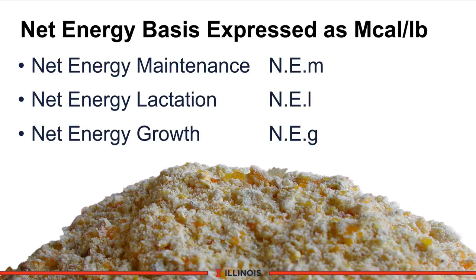The second energy system, and most common now in the U.S. and Canada, is the net energy system. Net energy is what's available after we remove all the losses. You will find three different terms listed for each feedstock: net energy maintenance — what's the energy content if the cow uses it to stay alive; net energy lactation (NEL) — if that energy is used to produce milk; or net energy gain — if a calf, heifer, or young cow uses that energy for gain or growth.